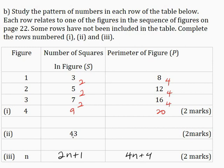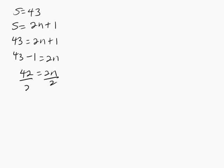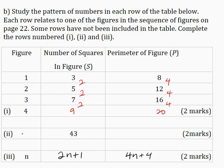Here we have S = 43, and I will use the formula S = 2N + 1 to find the value of N. Substituting S = 43: 43 = 2N + 1. Taking 1 across the equals sign gives 43 − 1 = 2N, so 42 = 2N. Dividing both sides by 2, N = 21. I will write that into the table.